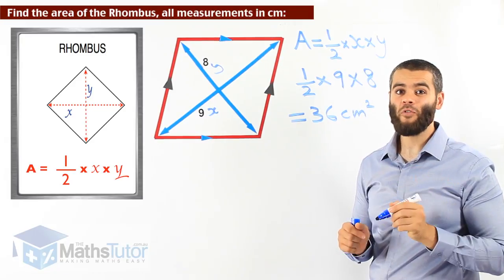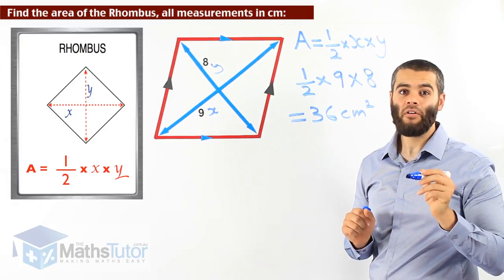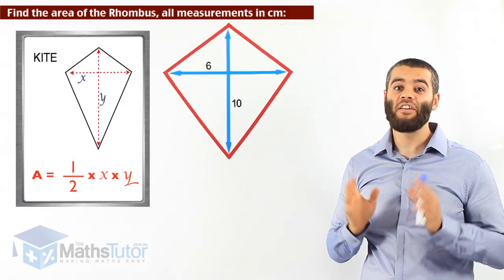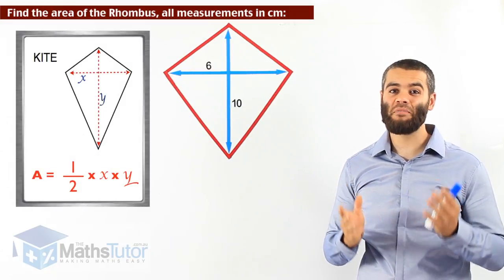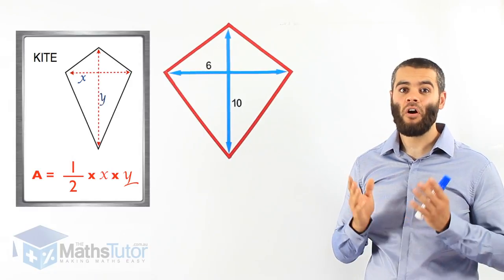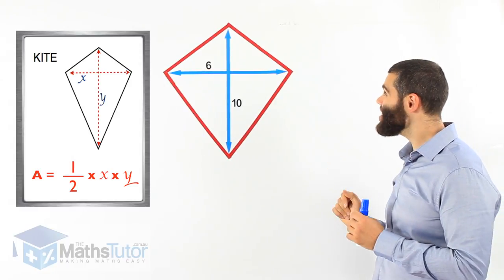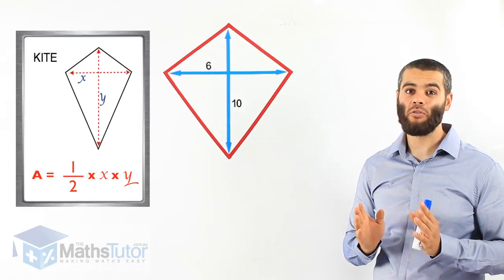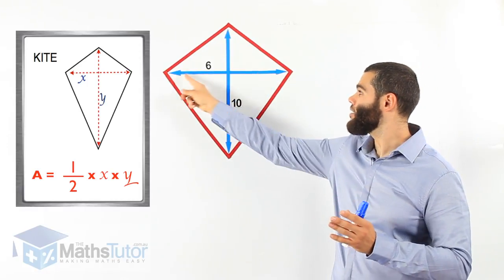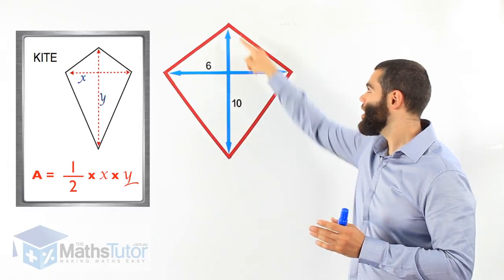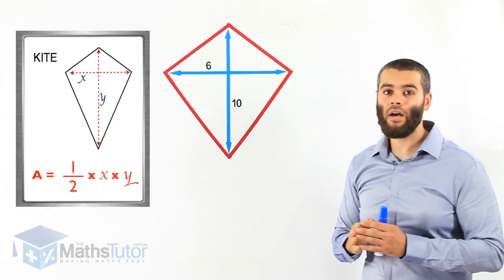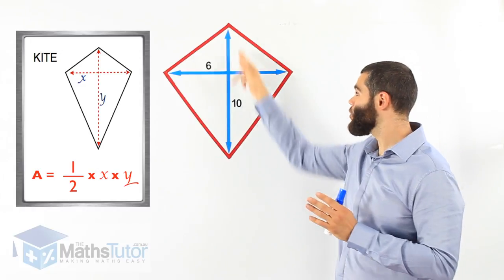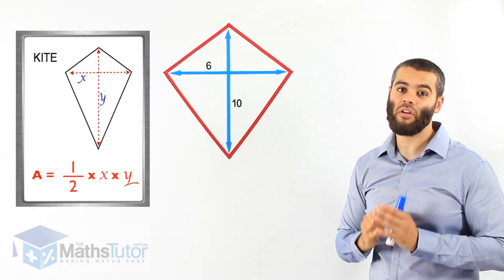Now we're going to use the same formula to find the area of a kite. Both the area of a kite and the area of a rhombus have the same formula. We can see that the kite has diagonals — the x and y we mentioned are the diagonals of the kite. It doesn't really matter which you call x and which you call y, as long as you know the measurements are for the diagonals and not the sides of the kite.